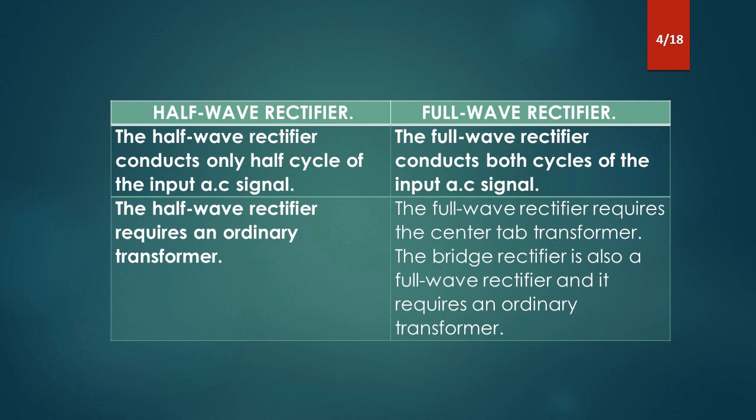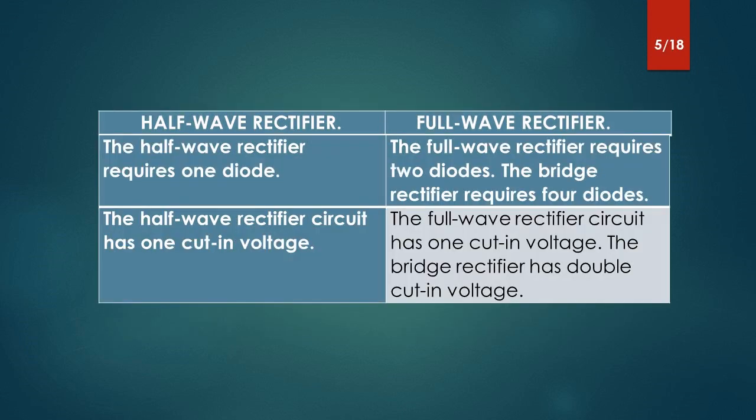The half-wave rectifier requires an ordinary transformer. The full-wave rectifier requires the center-tap transformer. The bridge rectifier is also a full-wave rectifier and it requires an ordinary transformer. The half-wave rectifier requires 1 diode, the full-wave rectifier requires 2 diodes, and the bridge rectifier requires 4 diodes.